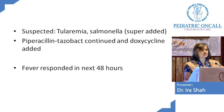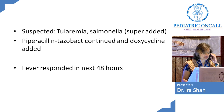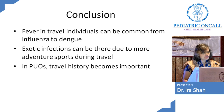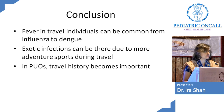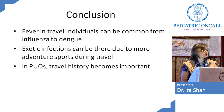Tularemia — we said it's a travel infection to Europe, but you could get a similar thing from animal exposure here in India. Fever in travelers can range from common influenza to dengue. Exotic infections are becoming more common because we are now prone to adventure sports during travel. In PUOs, don't forget travel history as well as animal exposure history.